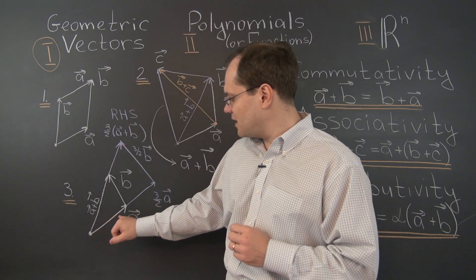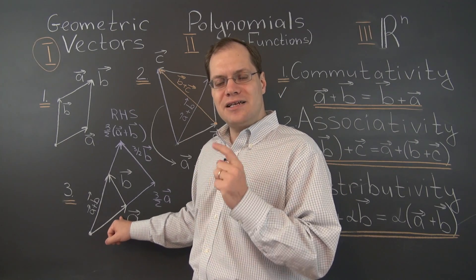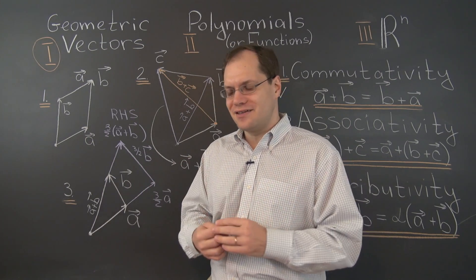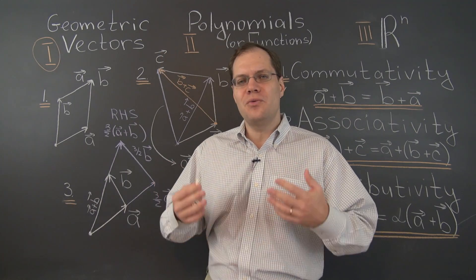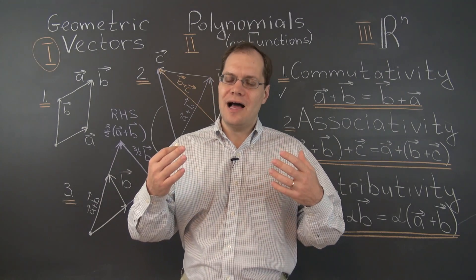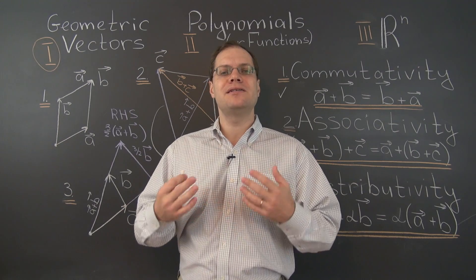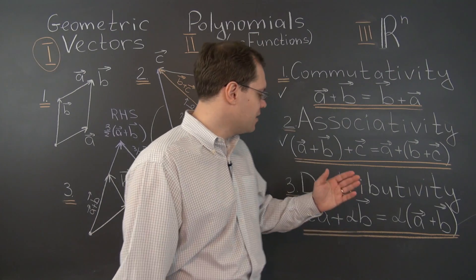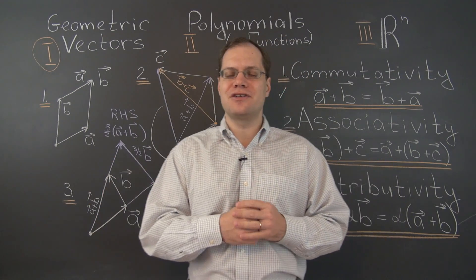There are a handful more axioms beyond these three, some of which would be more confusing than helpful to discuss. For example, one requirement states that if you multiply a vector by the number one, the vector remains unchanged — and that property is so self-evident for geometric vectors that it would be confusing to bring up. So I'm very happy that we're not taking a formal approach to linear algebra, but instead trying to discover the essence of the subject.